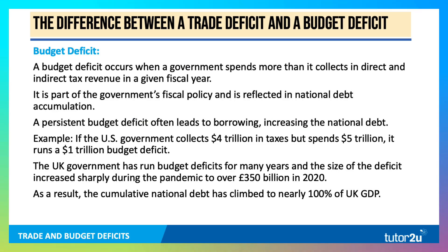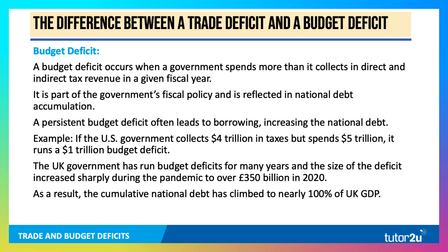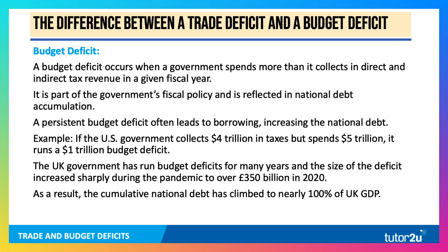A budget or fiscal deficit happens when a government spends more than it takes in from all those different direct and indirect taxes in a given fiscal year. It's reflected in the national debt accumulation, because when a government is running a persistent budget deficit, that means they have to borrow — typically by issuing debt — and that increases the national debt. For example, if the US government collects four trillion in taxes but spends five trillion, then it runs a one trillion budget or fiscal deficit.